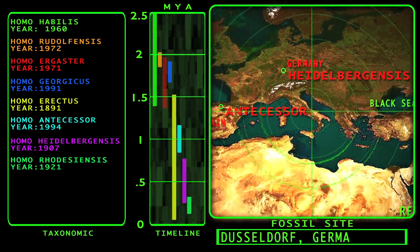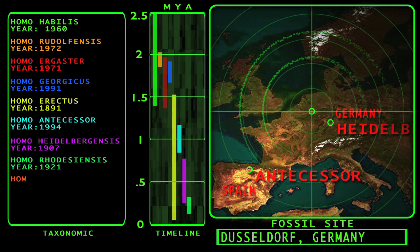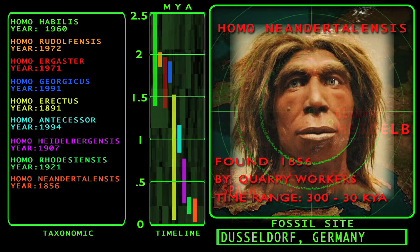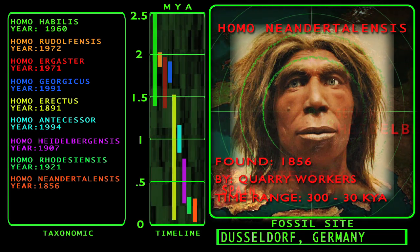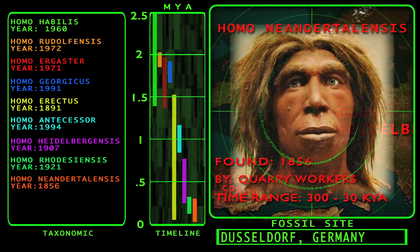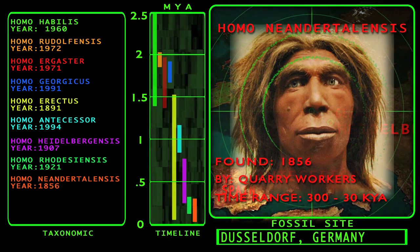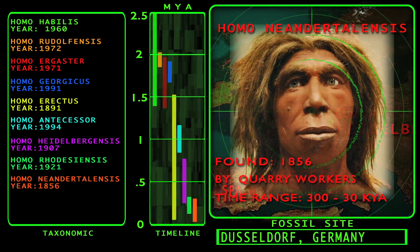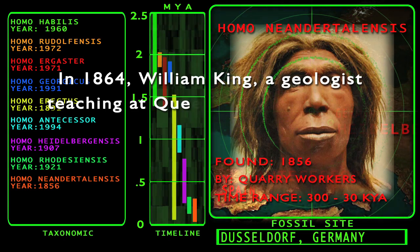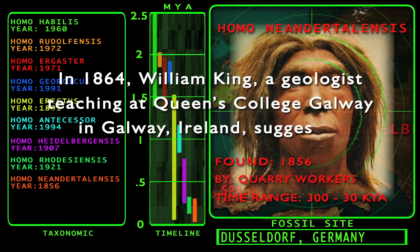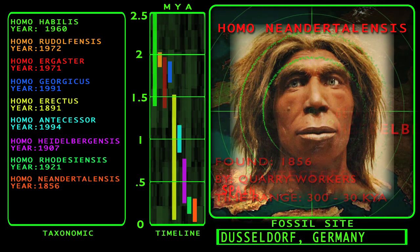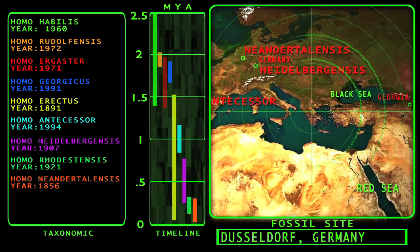Next on our timeline is Homo neanderthalensis. The first fossils designated Homo neanderthalensis were discovered in 1856 in a cave near Düsseldorf, Germany during mining operations by limestone quarry workers. The fossils were given to amateur naturalist Johann Carl Fuhlrott, who brought them to Hermann Schaaffhausen, a professor of anatomy at the University of Bonn. Schaaffhausen and Fuhlrott made the discovery public in 1857. In 1864, William King, a geologist at Queen's College Galway in Ireland, suggested the species name Homo neanderthalensis. The time range of neanderthalensis is about 300,000 years ago to around 30,000 years ago.